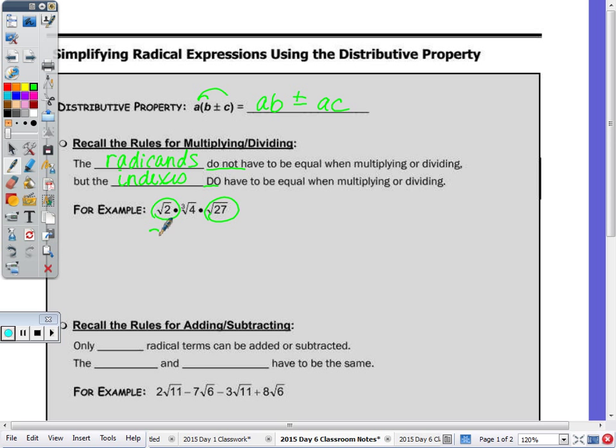So this would really be cube root of 4 times the square root of 54. 7 and 7 is 14, carry the 1. And when you break down 54, that's equal to 9 times 6. So square root of 9 would be 3 radical 6 times the cube root of 4.